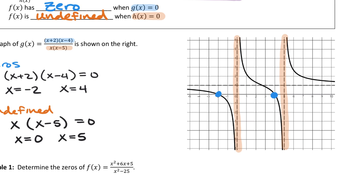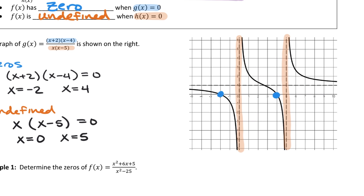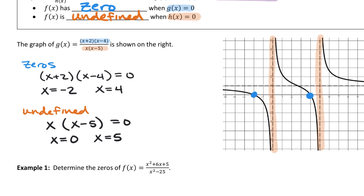We call those undefined values. So we have zeros at x = -2 and x = 4, and undefined values at 0 and 5 — those are the places where the particular characteristics of this rational function occur. Top gives zeros, bottom gives undefined values.